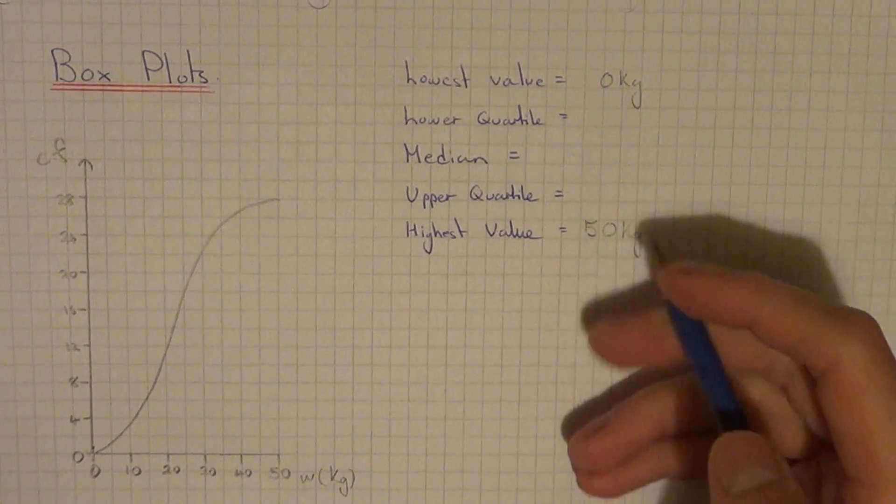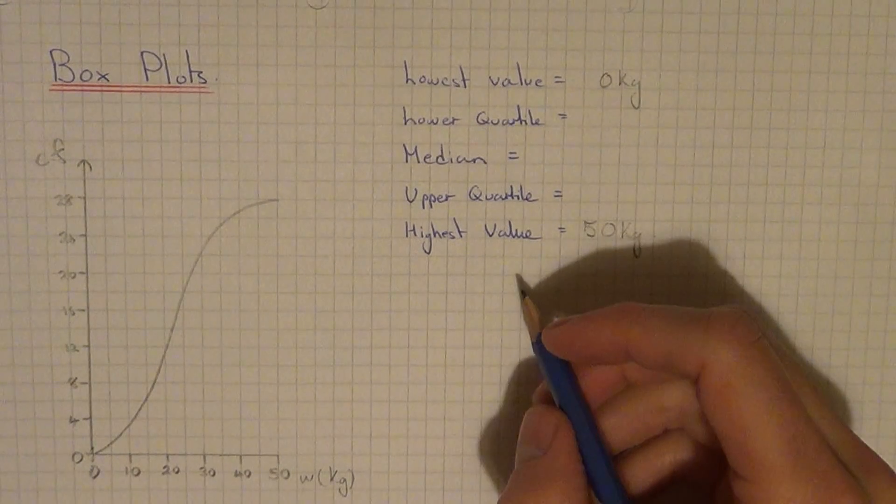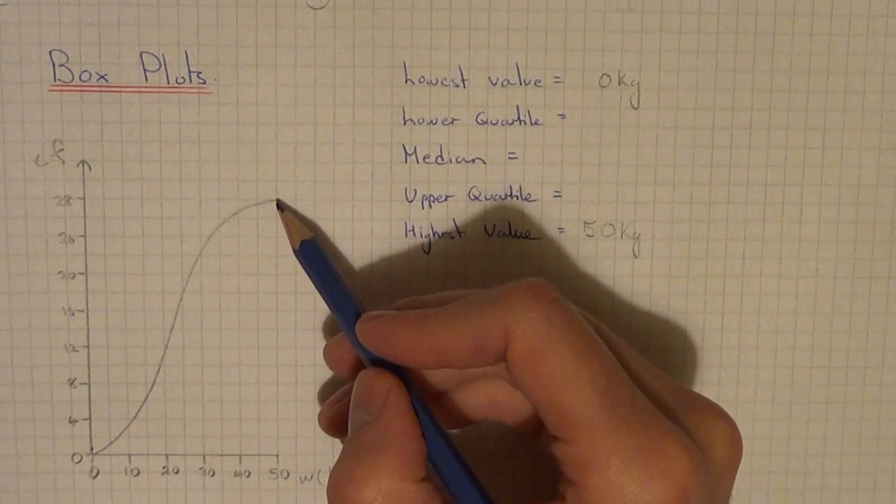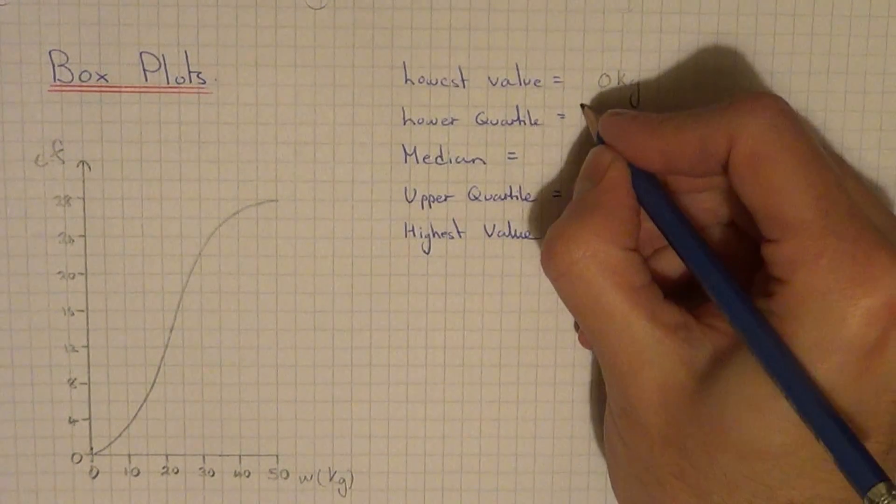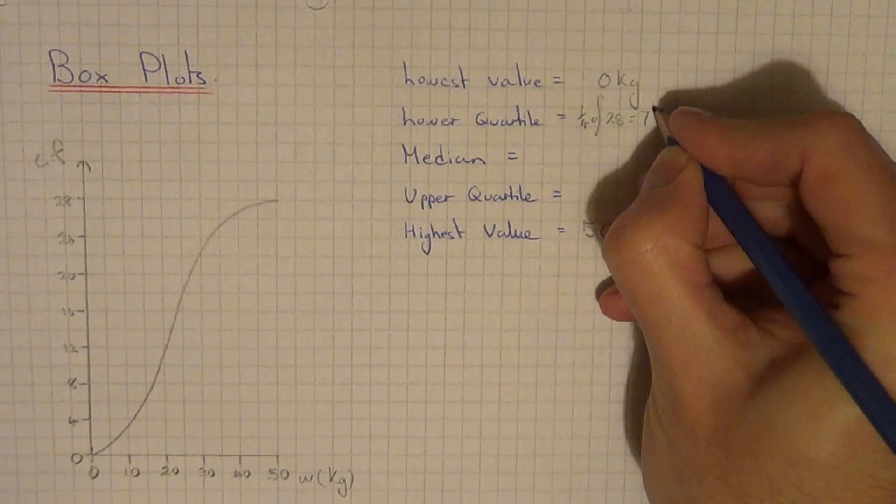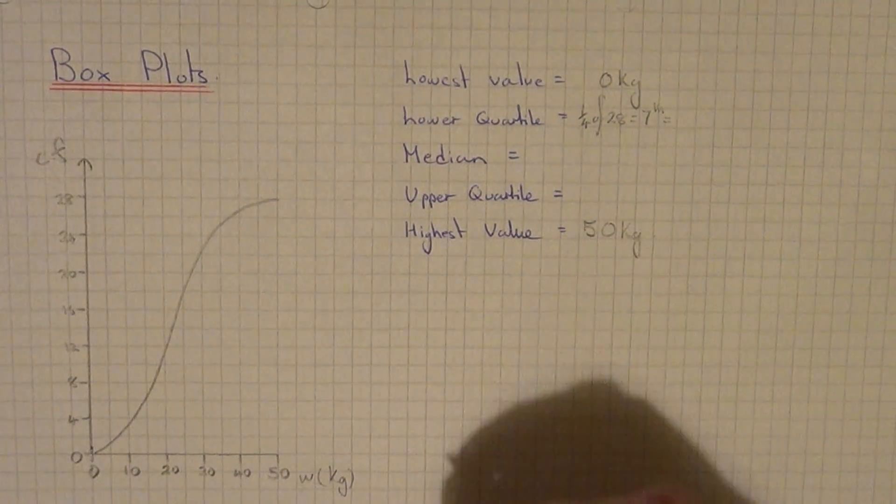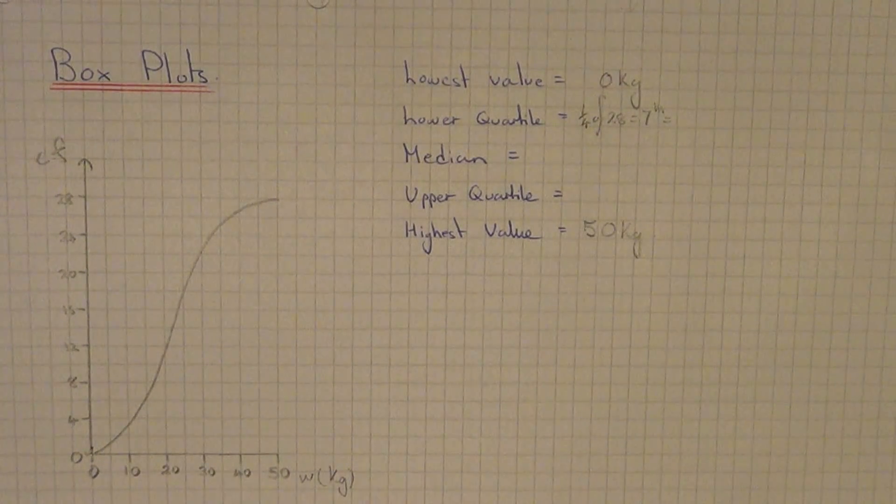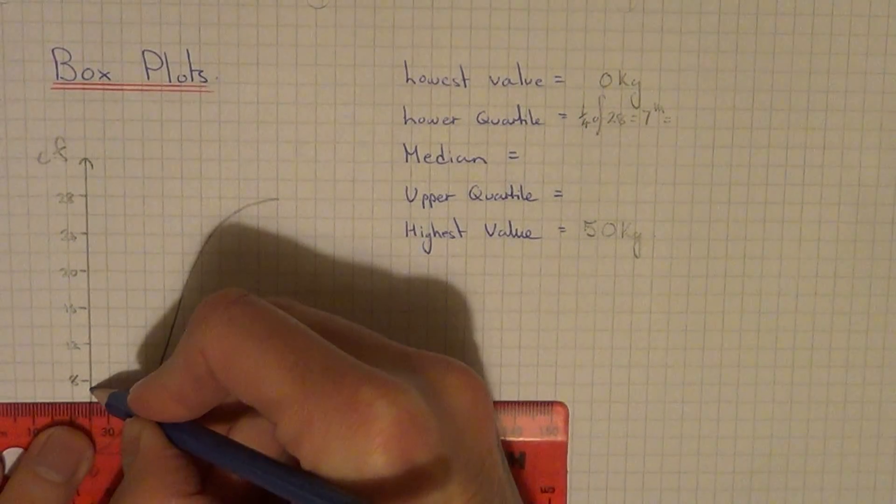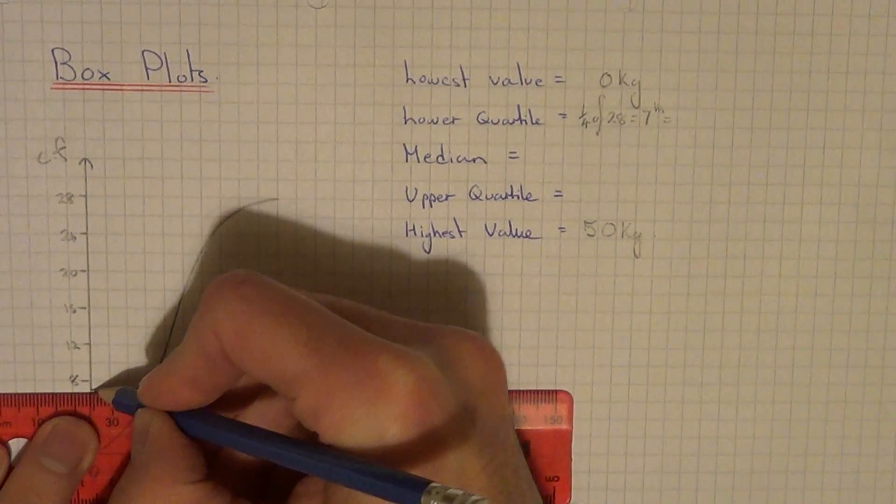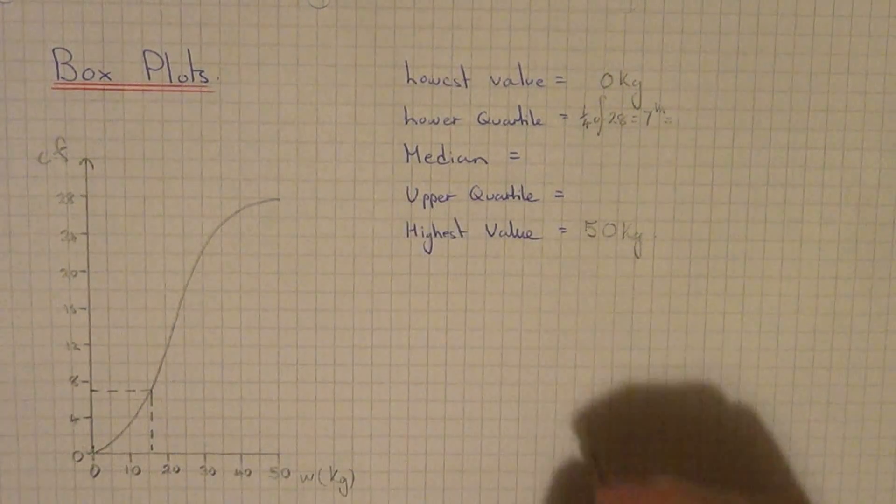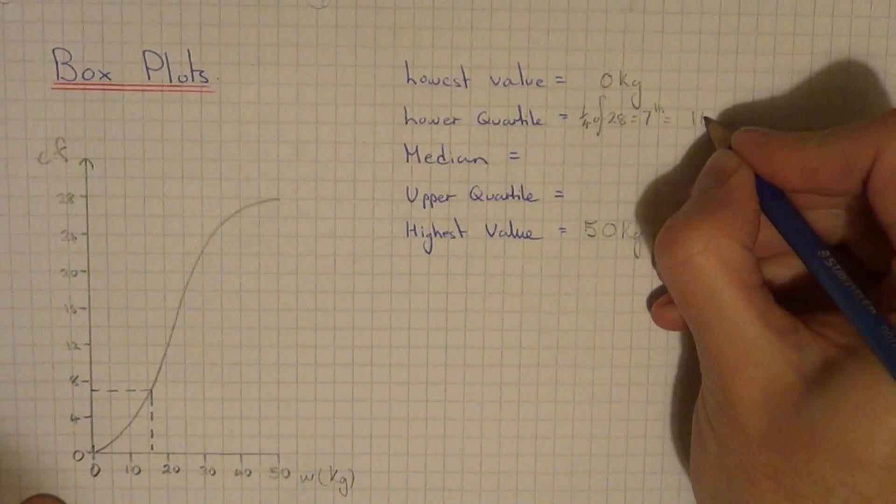So let's now work out the lower quartile, the median, and the upper quartile. The lower quartile is a quarter of the way through the data, so if we have 28 people we need to work out a quarter of 28, this gives us 7. So our lower quartile is the 7th person from the bottom of the list. So if we go to 7 on the cumulative frequency which is here, hit your curve and read off the value. This gives a value of about 16 kg.